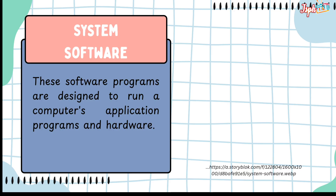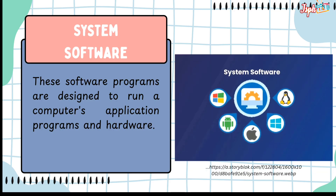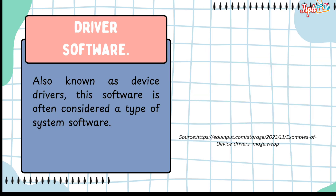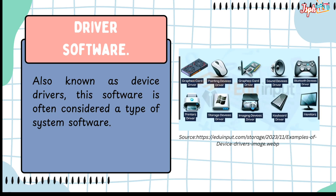Next, we have system software — programs designed to run a computer's application programs and hardware, such as iOS, Android, Microsoft Office, and Linux. Next, driver software, also known as device drivers, often considered a type of system software. Examples include graphics card drivers, pointing devices, sound devices, Bluetooth, monitors, keyboard, imaging devices, storage devices, and printer drivers.